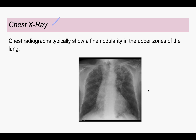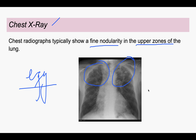On the chest X-ray, it will show fine nodularity and eggshell calcification. The fine nodularity is predominantly in the upper zones of the lung. Regular monitoring of persons working in the mining industry or sandblasting industry is done through chest X-ray.